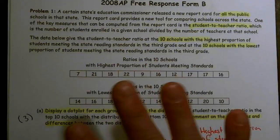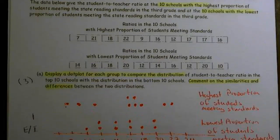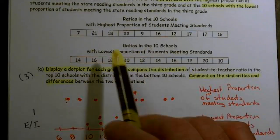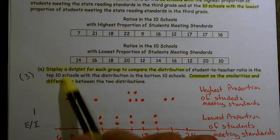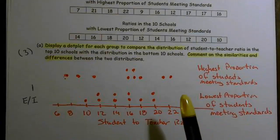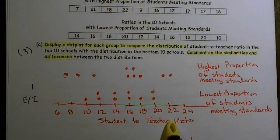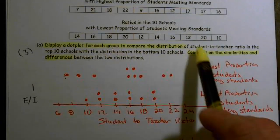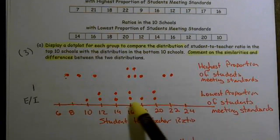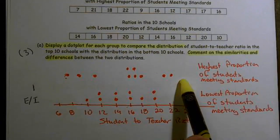So Part A was worth a total of three points. First, we need to display a dot plot of the data. We have a list of the student-teacher ratios — these are the highest performing schools, and this is the lowest performing schools. The dot plot could be as simple as having a scale labeled 'student-to-teacher ratio.' For the top 10, we'd have one dot for 12, two dots, etc. This would be the lowest proportion of students meeting standards, and the highest proportion of students meeting standards.